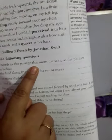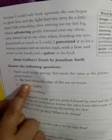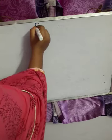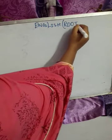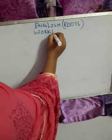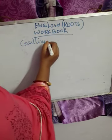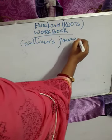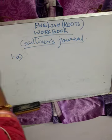Find words in the passage that mean the same as the phrases given below. The land along the edge of the sea or ocean. What will be the answer? The answer is: shore.